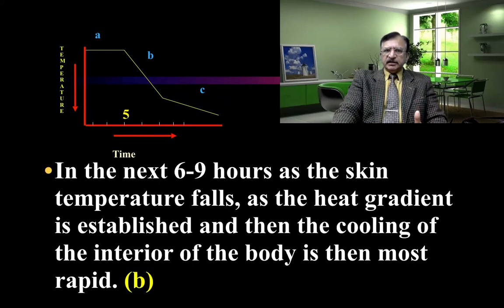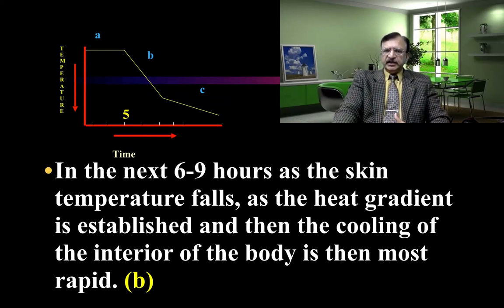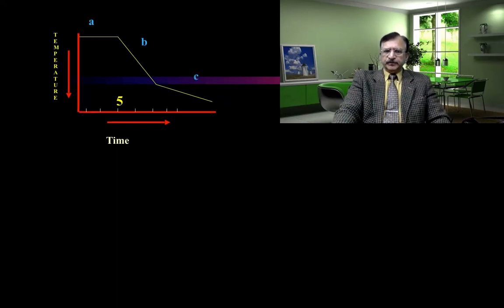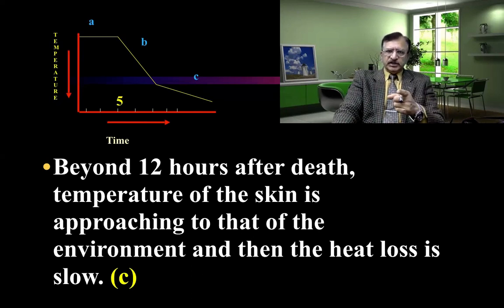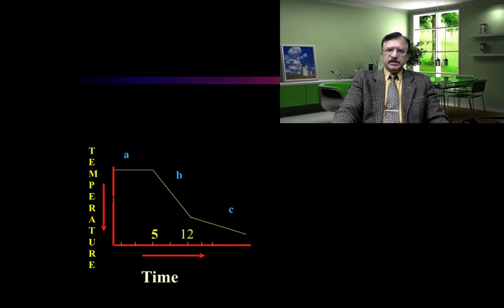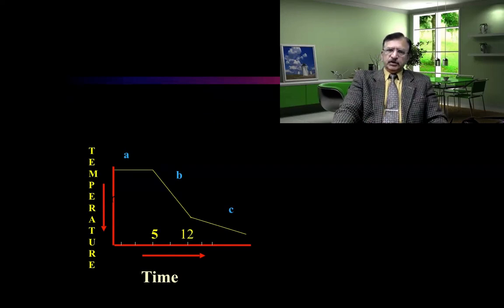In Part B of the curve, over the next 6 to 9 hours, as the skin temperature falls and a heat gradient is established from the core to the skin surface, the body starts cooling rapidly. Then, beyond 12 hours after death, as the skin temperature approaches that of the environment, heat loss slows. Part C of the curve shows this slow heat loss. The overall result is a parabolic curve rather than the exponential type seen in a metallic object.